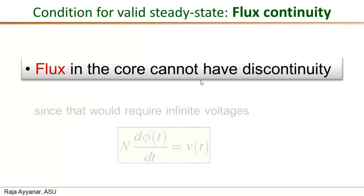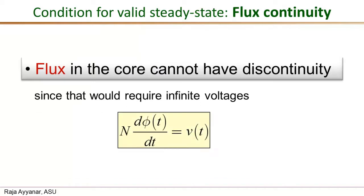Why is that? Faraday's law gives the relationship between the flux in the core and the voltage of any winding: N·dφ/dt equals the applied voltage V(t), where φ is the flux in the core. A step change in flux would mean dφ/dt is either positive or negative infinity, which would require the voltage to be positive or negative infinity — and that is not possible.